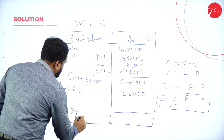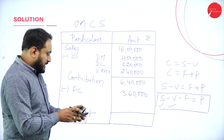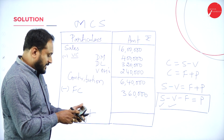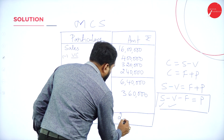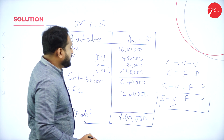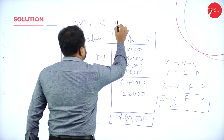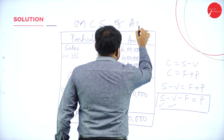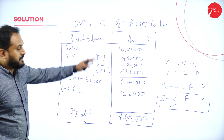Profit = Contribution − Fixed Cost = ₹6,40,000 − ₹3,60,000 = ₹2,80,000. So profit is ₹2,80,000. This completes the Marginal Cost Statement of Azad Company Limited.